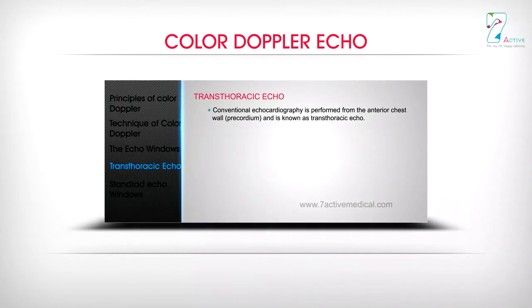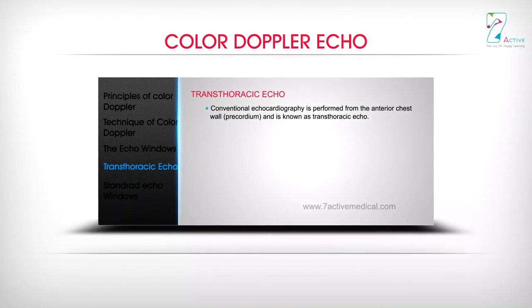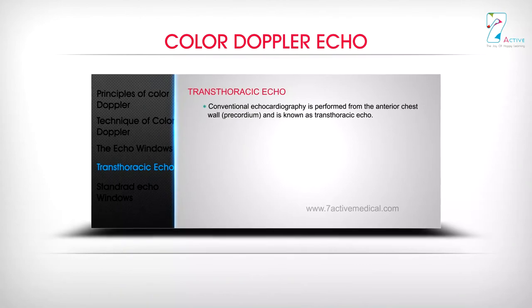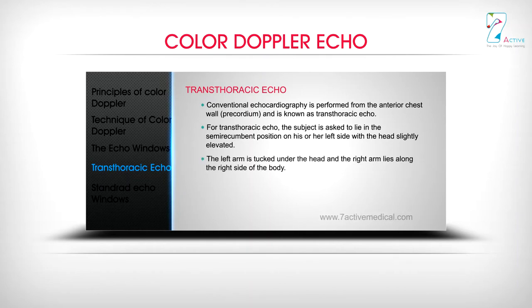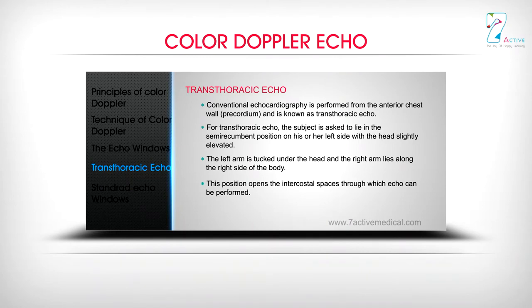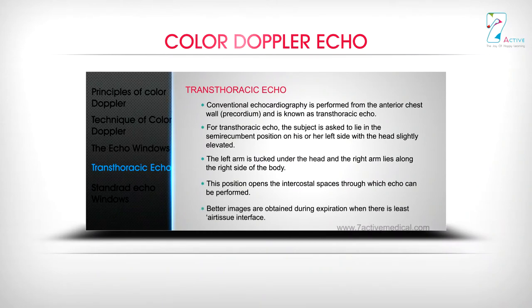Conventional echocardiography is performed from the anterior chest wall and precordium, known as transthoracic echo. The subject is asked to lie in the semi-recumbent position on the left side with the head slightly elevated. The left arm is tucked under the head and the right arm lies along the right side of the body. This position opens the intercostal spaces. Better images are obtained during expiration when there is least air-tissue interface.